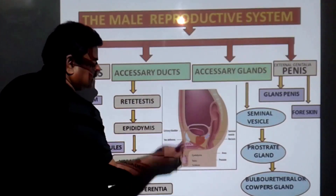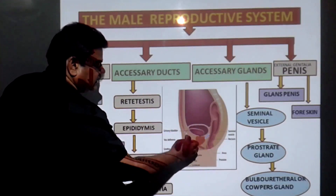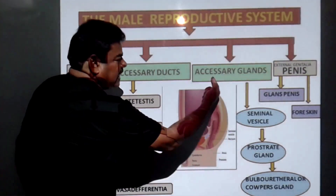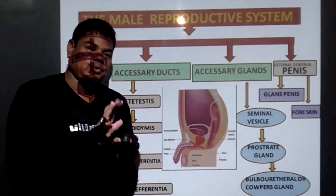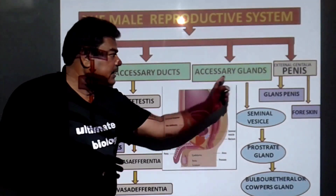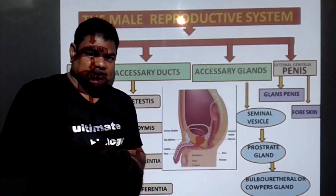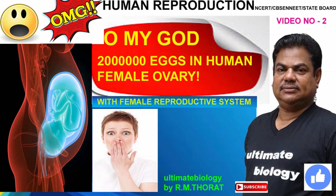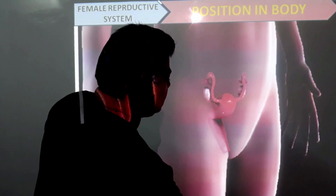Duct means it is a tube-like structure. Accessory duct. Next, that is the accessory gland. Accessory duct is a material of the system.